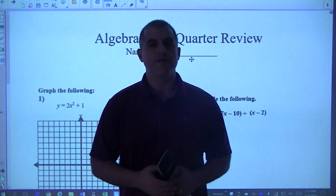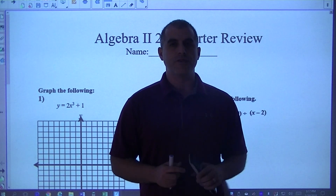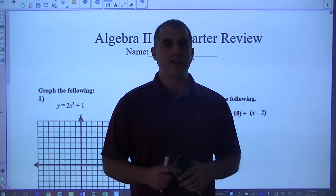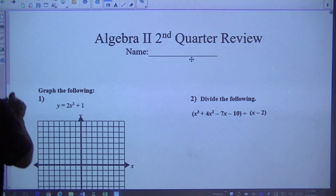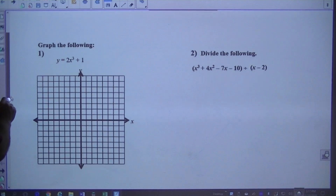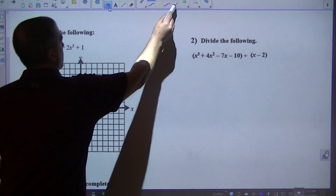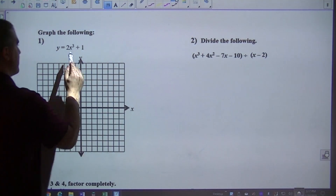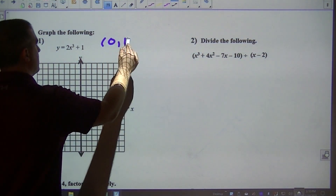This is going to be the quarter two review. It's new for 2017-2018. Just like we've always graphed all year, what we want to do is find the anchor point, which would be zero one.